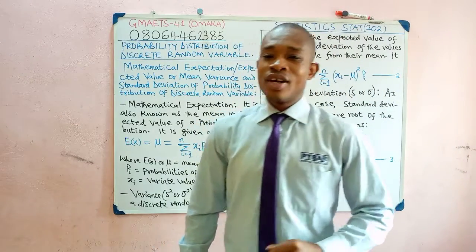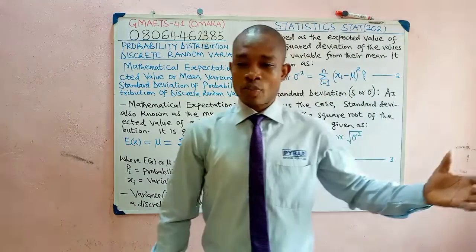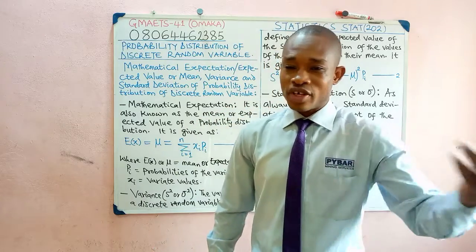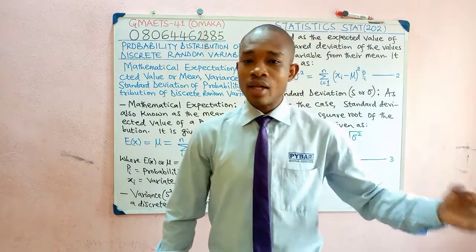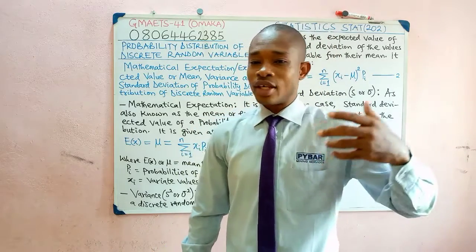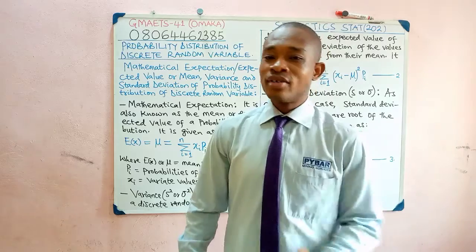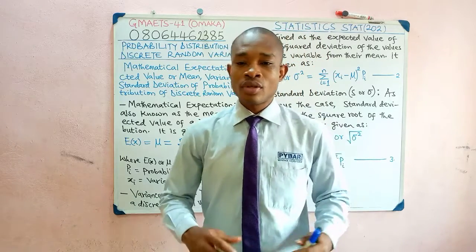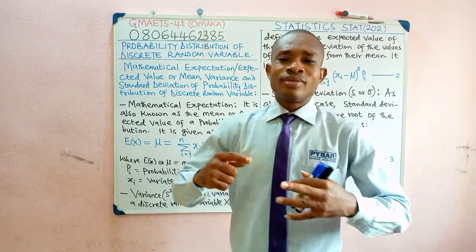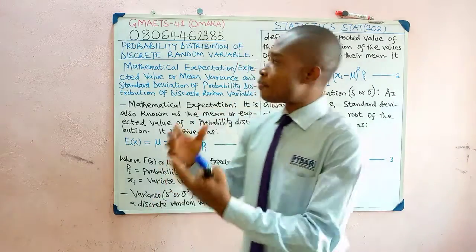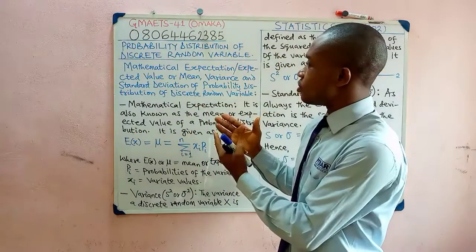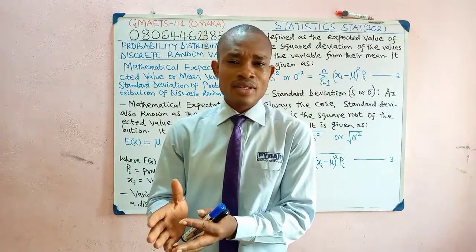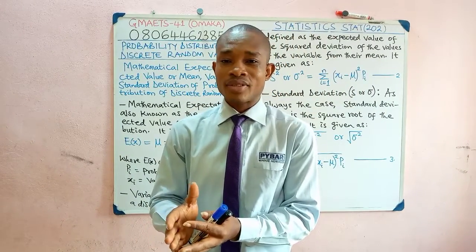You would recall, under measures of dispersion, we treated some of these things. You heard about the mean, the variance, the standard deviation. Similarly, under probability distribution of discrete random variable, we also talk about these parameters.